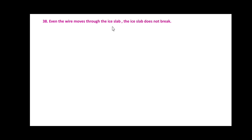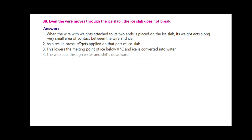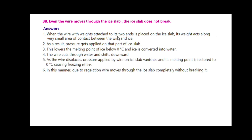Even though a wire moves through an ice slab, the ice slab does not break. When a wire with weights attached to its ends is placed on the ice slab, its weight acts along a very small area of contact between the wire and ice. As a result, pressure gets applied on that part of the ice slab. This lowers the melting point of ice below zero degrees Celsius and ice is converted into water. So, the wire cuts through the water and shifts downwards. As the wire displaces, the pressure applied by the wire on the slab vanishes and the melting point is restored to zero degrees Celsius, causing refreezing of the ice. In this manner, due to regelation, the wire moves through the ice slab completely without breaking it.